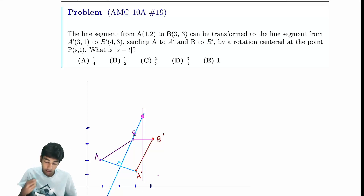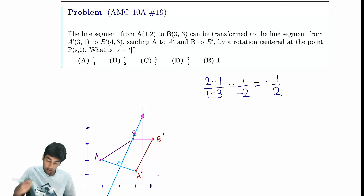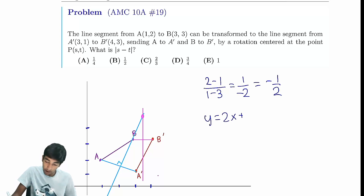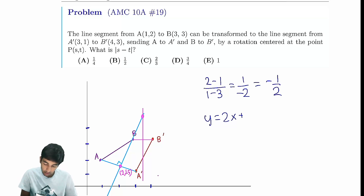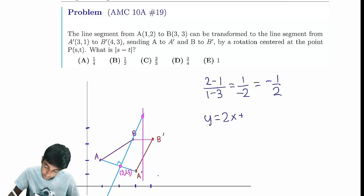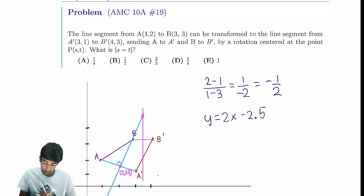First, find the slope from A to A'. The slope is (2 minus 1) over (1 minus 3), which is 1 over negative 2, or negative one half. So the slope of the perpendicular bisector must be 2, giving us y equals 2x plus something. Since it's the perpendicular bisector, it passes through the midpoint of AA'. Averaging the coordinates gives us the midpoint (2, 1.5). Plugging in: y equals 2 times 2 minus 2.5, giving us the equation of the first line.